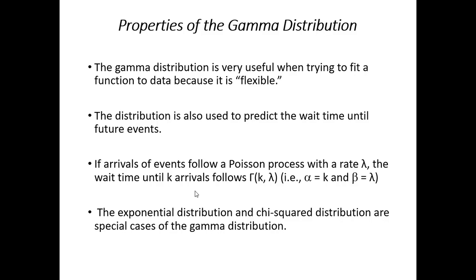From a practical point of view, we could think of the distribution and the way it's used to predict waiting times for future events. So, for example, if arrivals of events follows a Poisson process with rate lambda, then the wait time until you get k arrivals follows this gamma distribution, gamma of k lambda. So, in other words, here we mean alpha is equal to k. k is the number of arrivals you're waiting for, and lambda is our average rate from the Poisson, and so beta is equal to lambda.